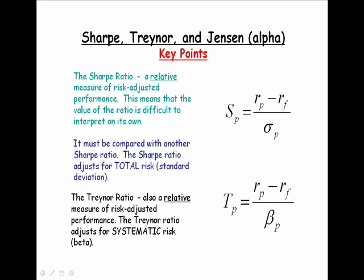The Treynor ratio is also a relative measure of performance with the same interpretation. It's very difficult to look at the value of Treynor and assess whether it was superior or inferior performance — one must compare a Treynor measure against another Treynor measure. Notice that in the denominator we have beta, the beta of the portfolio. So the Treynor ratio adjusts for systematic risk.